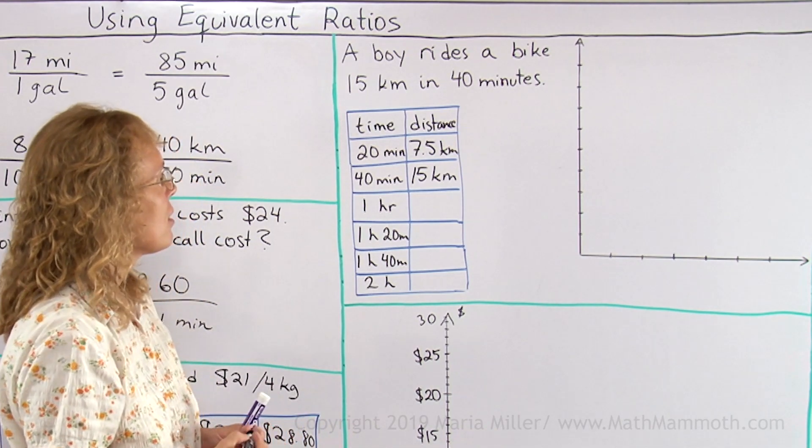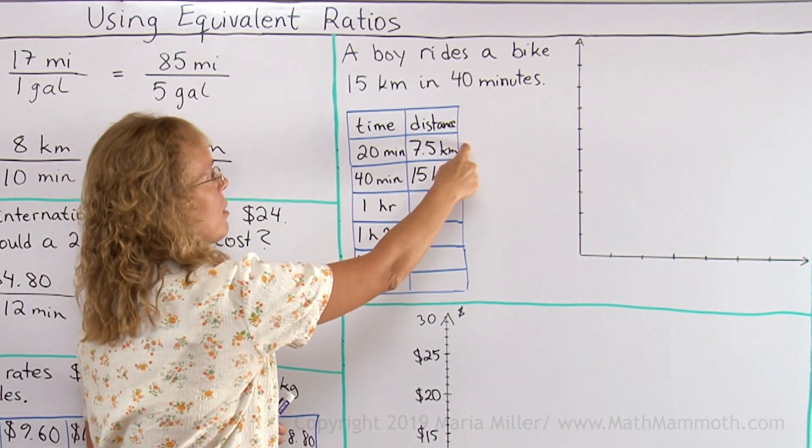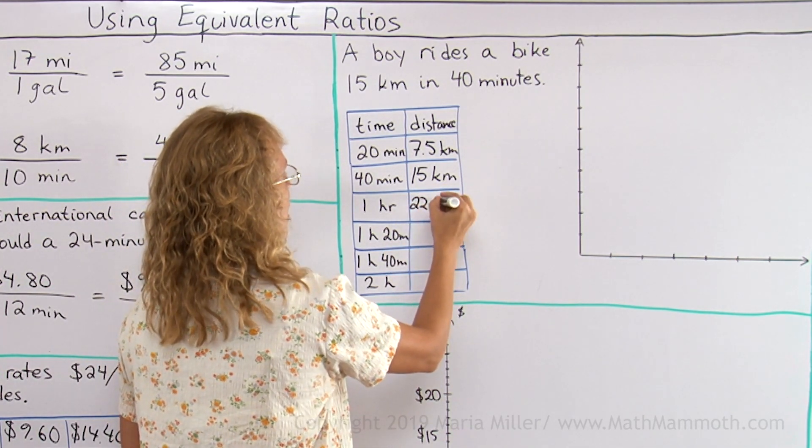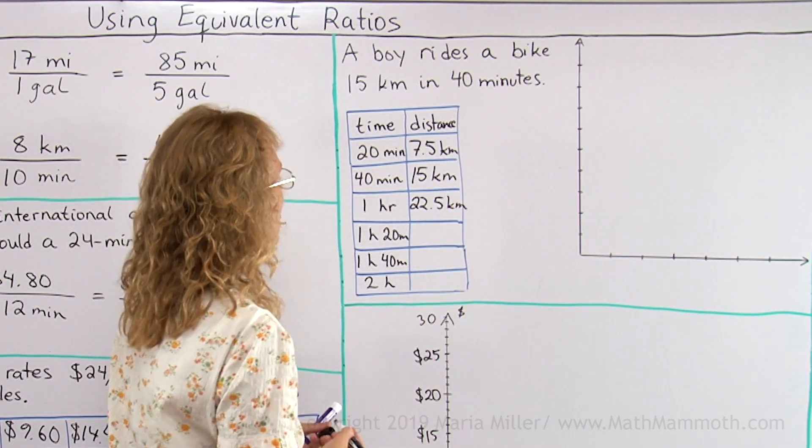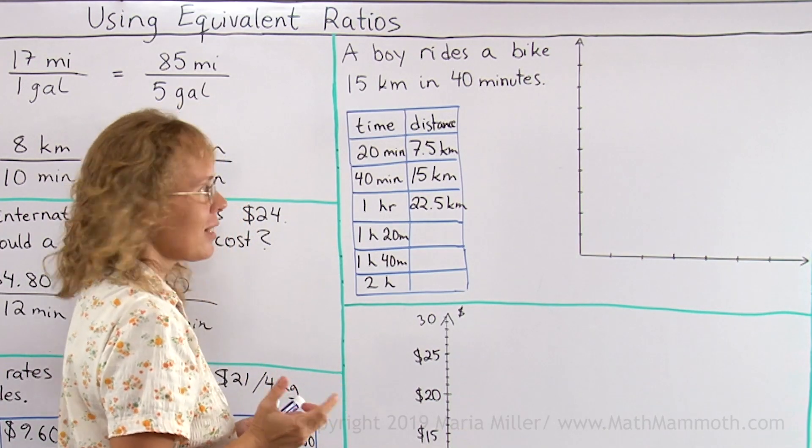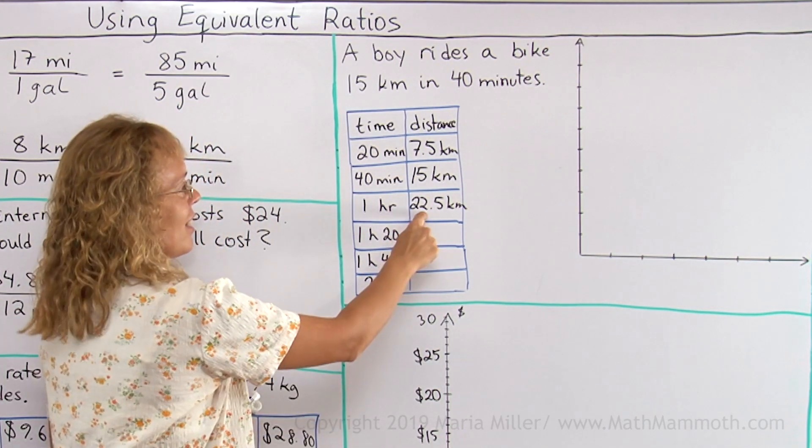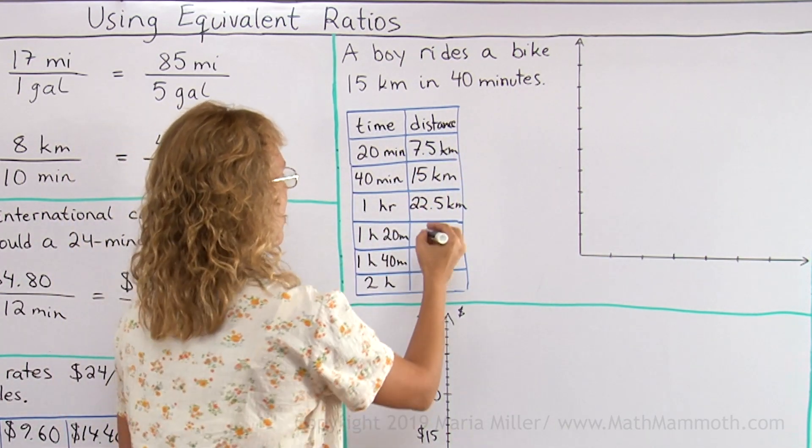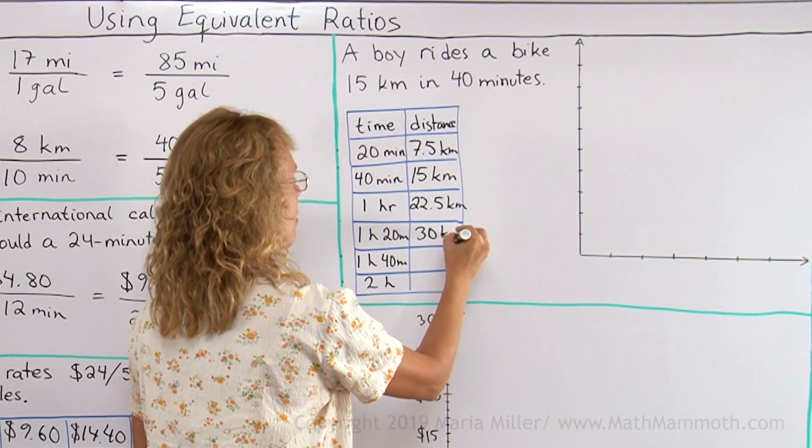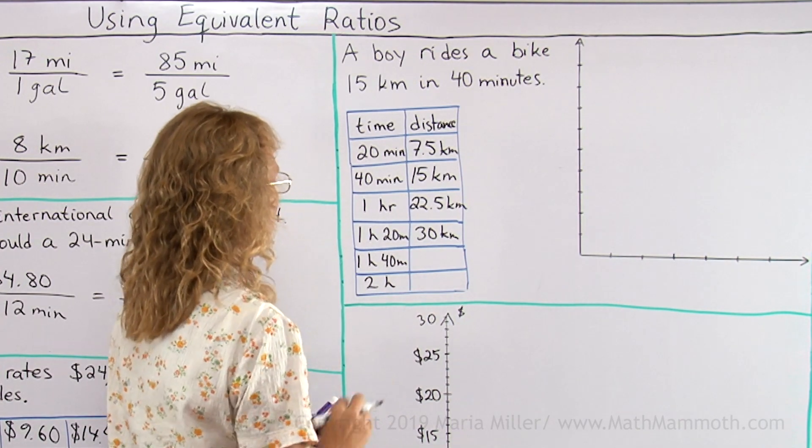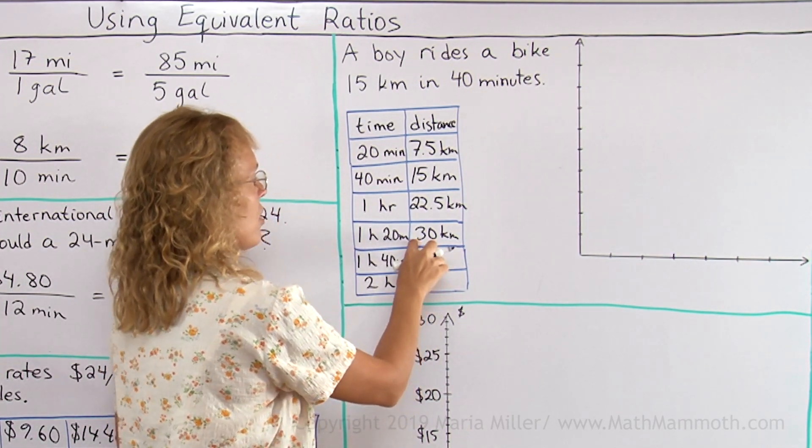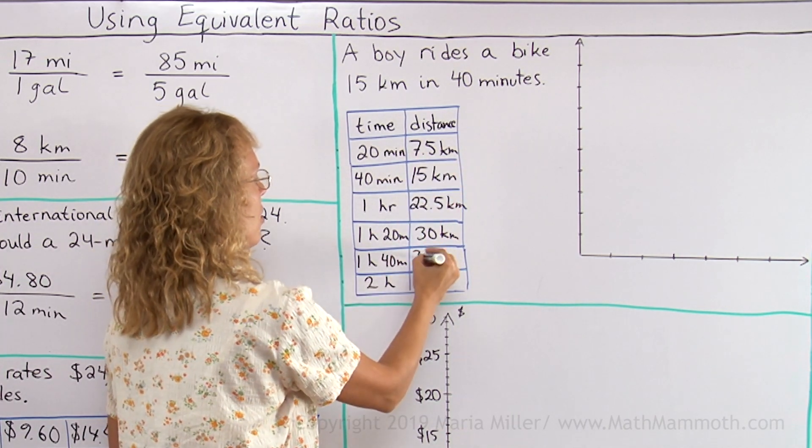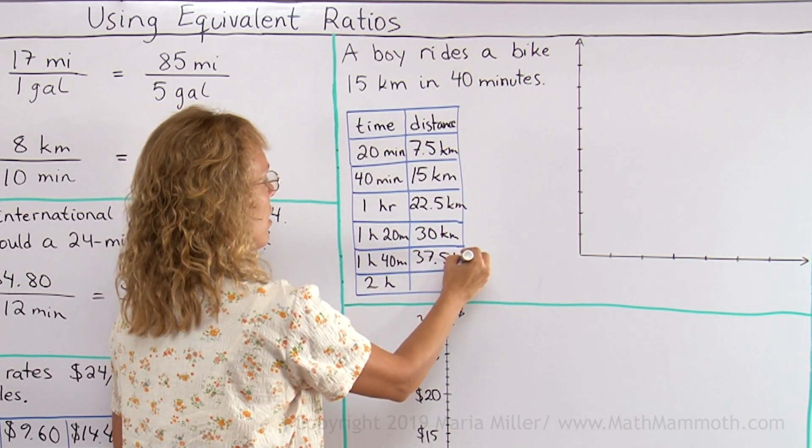In one hour, I can now go this times 3 or add 15 and 7.5 to get 22 and a half kilometers per hour. Now, in one hour 20 minutes, I can add this amount and then the 20-minute amount, these two. So I get exactly 30 kilometers or I could have doubled that. And then, one hour 40, I'll take this 30 kilometers and add how much he will ride in 20 minutes. So it is 37.5 kilometers.